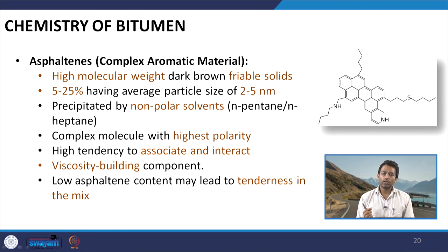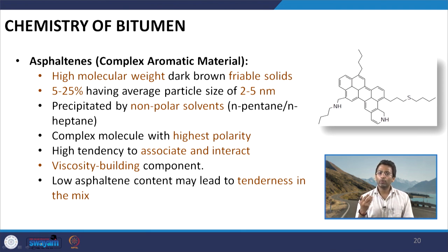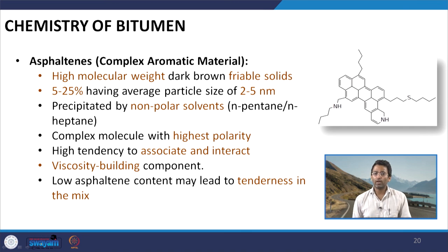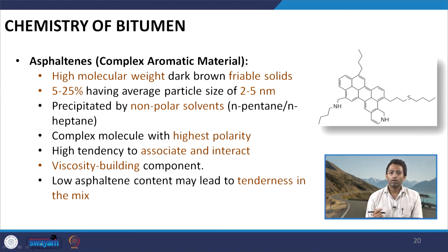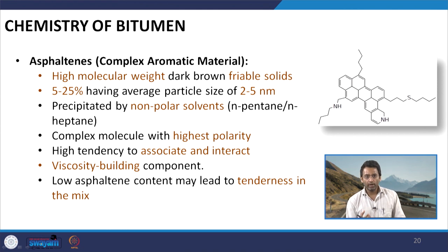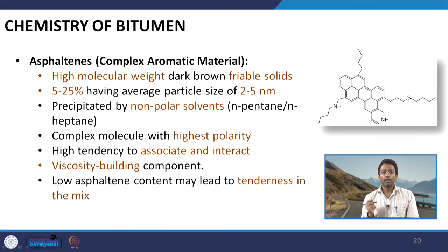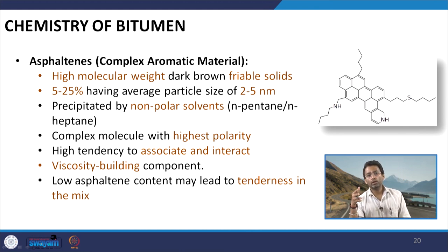Asphaltenes are basically the molecules which contain the heteroatoms, and therefore have high polarity — in fact the highest polarity in comparison to all the other chemical fractions in the bitumen. Therefore asphaltenes have a very high tendency to associate and interact within themselves and with other surfaces. Being molecules of higher molecular weight, they are the main viscosity-building component of the bitumen. If the amount of asphaltene in the bitumen is less, studies have shown that that particular bitumen will have a tendency to produce a tender bituminous mixture.